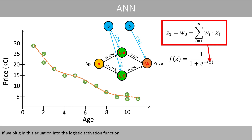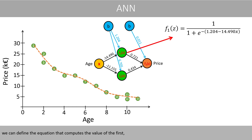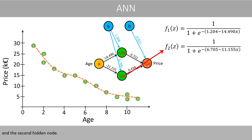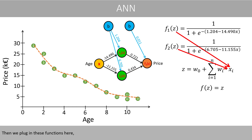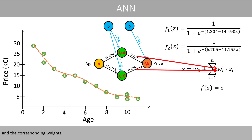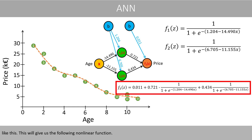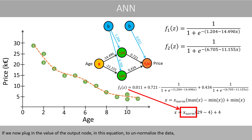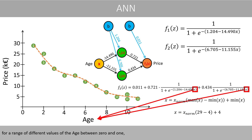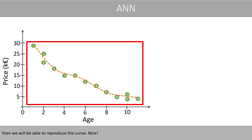If we plug the equation into the logistic activation function, we can define the equation that computes the value of the first and second hidden node. Then we plug in these functions and the corresponding weights and the bias weight into the identity function. This gives us the following nonlinear function. If we now plug in the output node value into the un-normalization equation and arrange the different values of age between 0 and 1, we will be able to reproduce the curve.